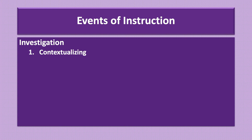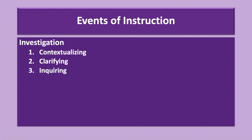Investigation includes three steps. The first step is contextualizing, where the teacher explains the process to the whole class and either shares an essential question that begins the inquiry process or has learners create an essential question for the topic of investigation. The teacher then works with students in small groups to help them connect students' previous experiences to the essential question. The next step is clarifying, where students discuss the project in small groups and the teacher facilitates as learners determine what they already know and what they need to know to complete the project. The third step is inquiring, where students begin acquiring the necessary knowledge and skills to complete the project.